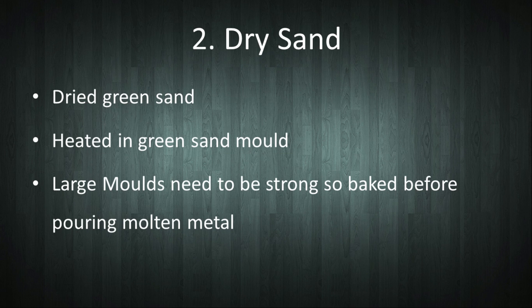The next is dry sand. Green sand when dried in molds by heating is called dry sand. Molds need to be prepared and then they are baked before pouring molten metal.